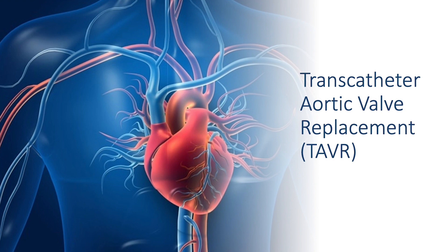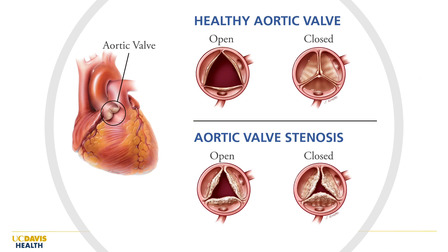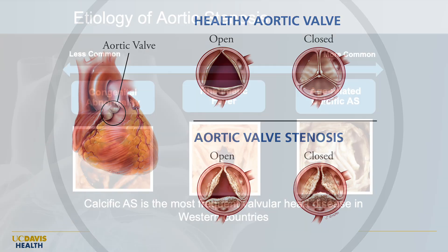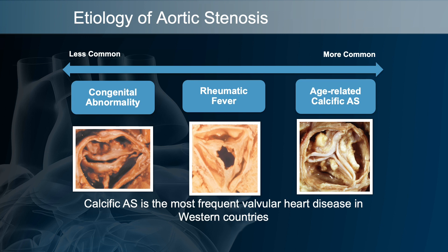Transcatheter aortic valve replacement is a procedure in which we treat patients that have a diseased aortic valve. Usually that valve is very calcified, very stiff, and stenotic — the valve just does not open very well. Some patients are born with a congenital abnormality, a bicuspid valve. Some have had rheumatic heart disease. The most common cause is age-related calcific degenerative aortic stenosis, where calcified nodules form on the valve and it won't open.